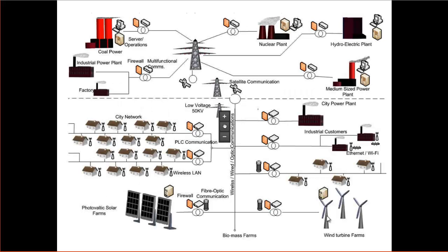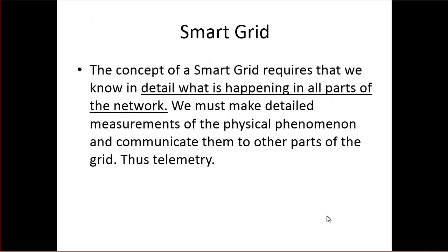Talking about the smart grid, the very concept of it requires that we know in detail what's happening in all parts of the network. These networks tend to be enormous. Here in Jacksonville where I live, the electric grid service area is about 900 square miles. That's really not that big compared to a lot of the electric operators in the country. The California ISO, which controls the electric distribution in quite a bit of California, covers most of California. So we're talking about taking these measurements over vast areas. And of course, we need to make the detailed measurements of the physical phenomenon and communicate them to other parts of the grid, thus telemetry.